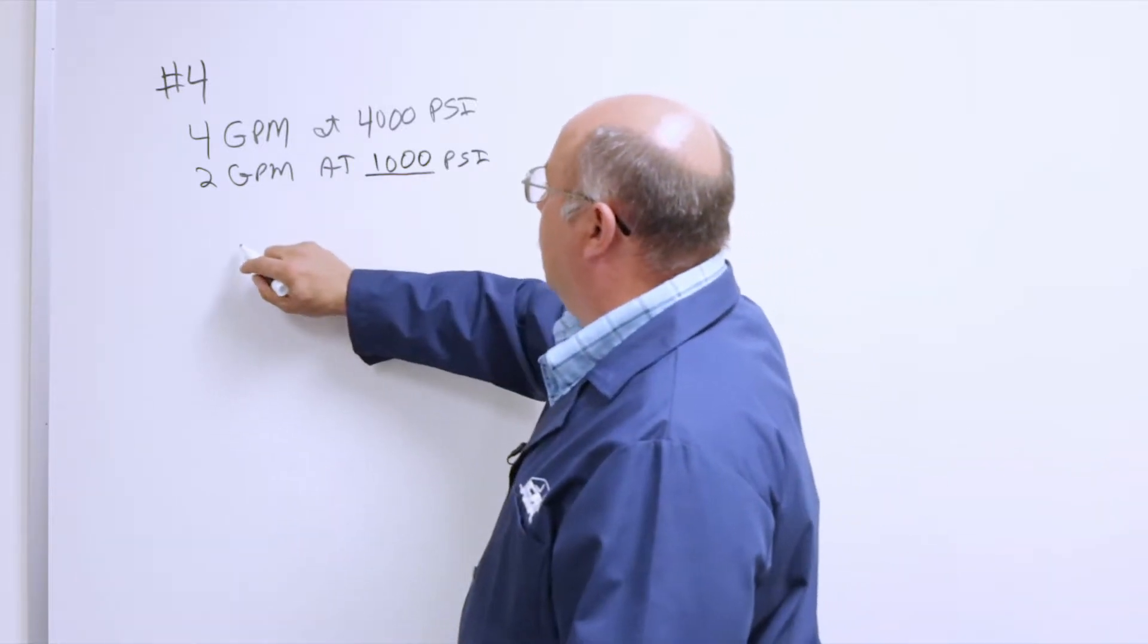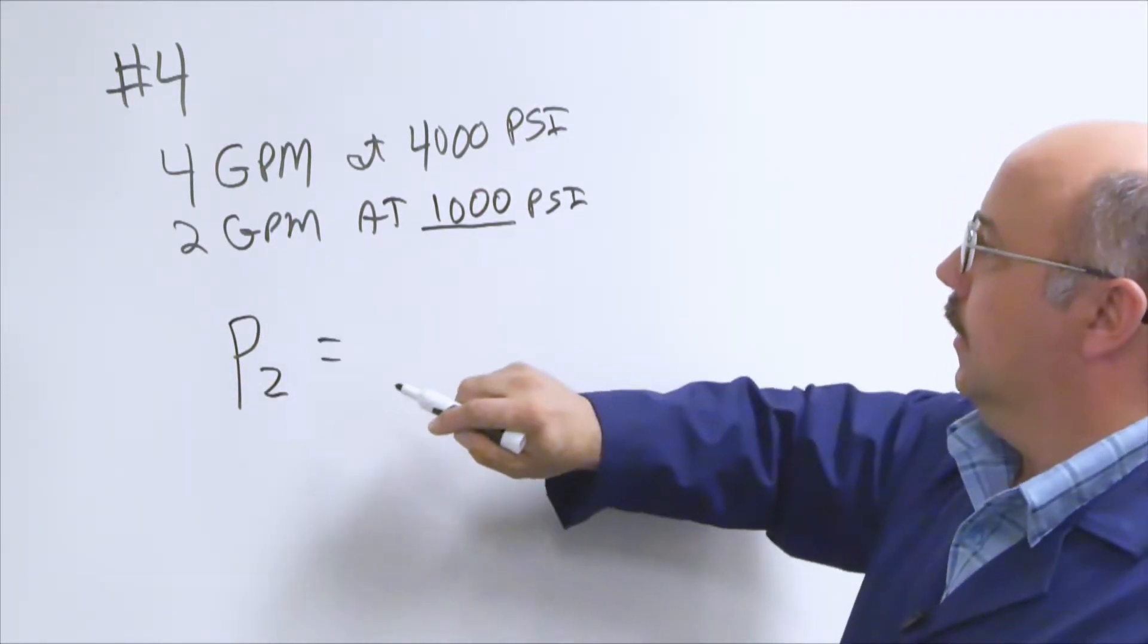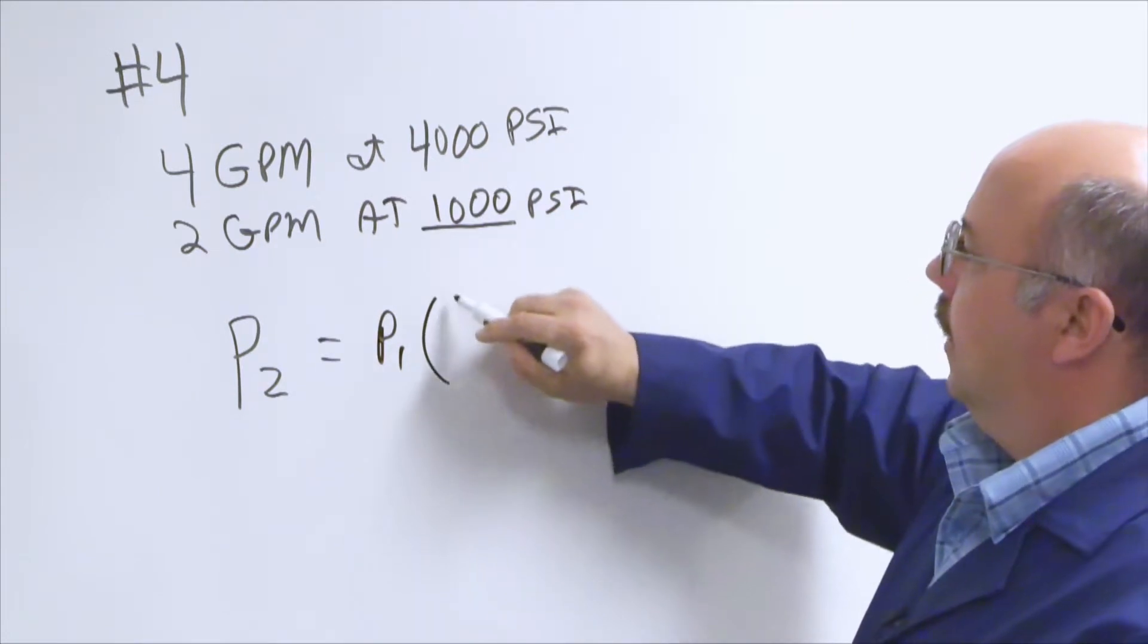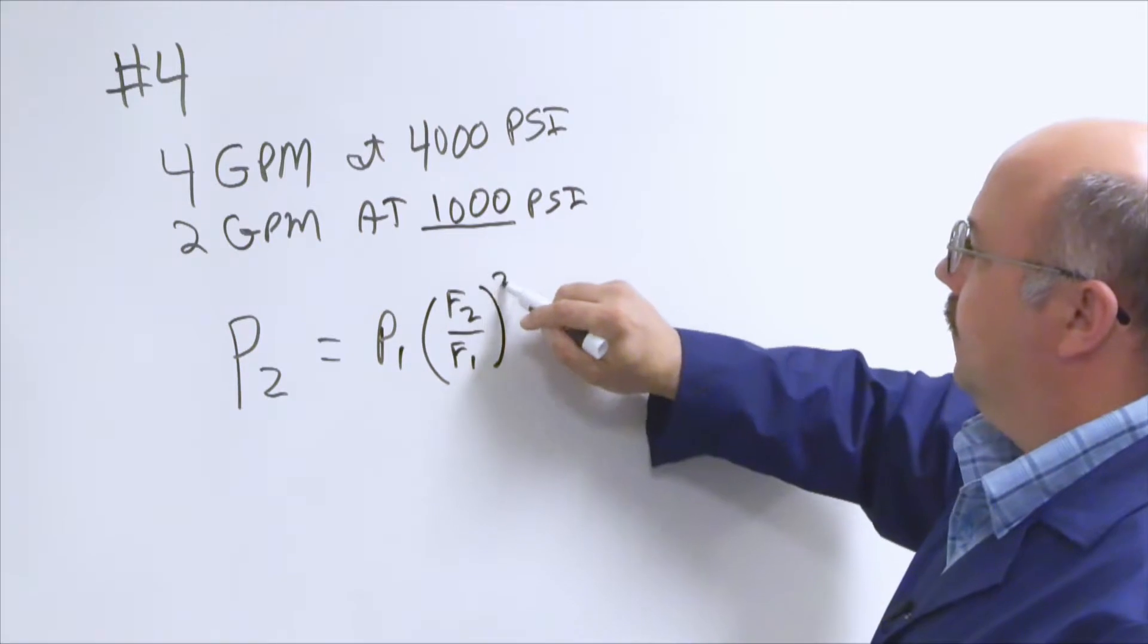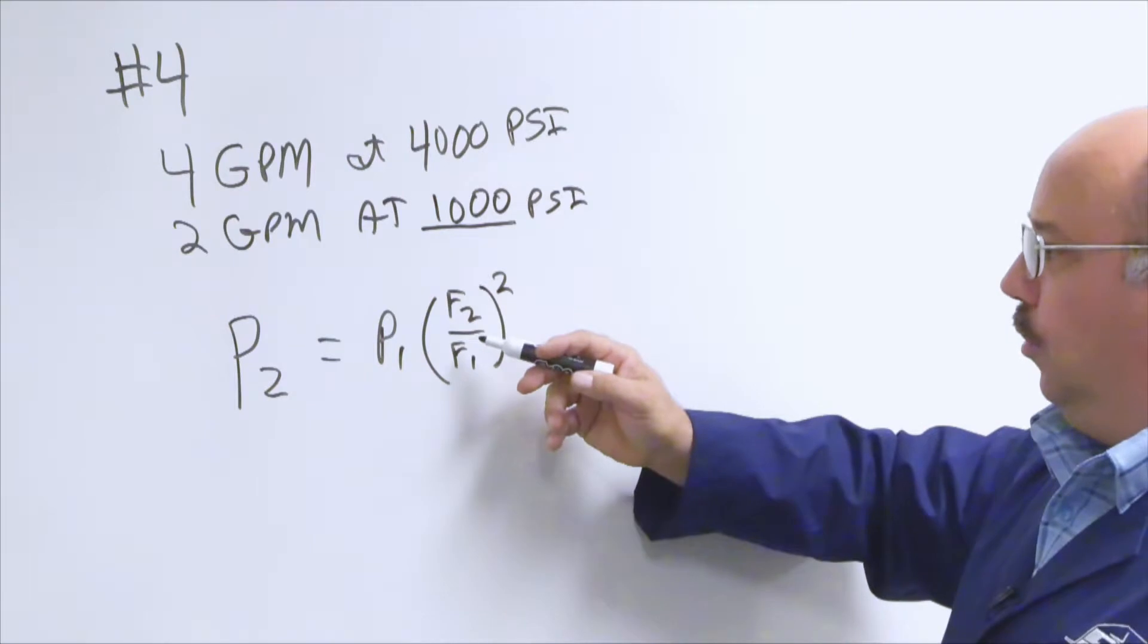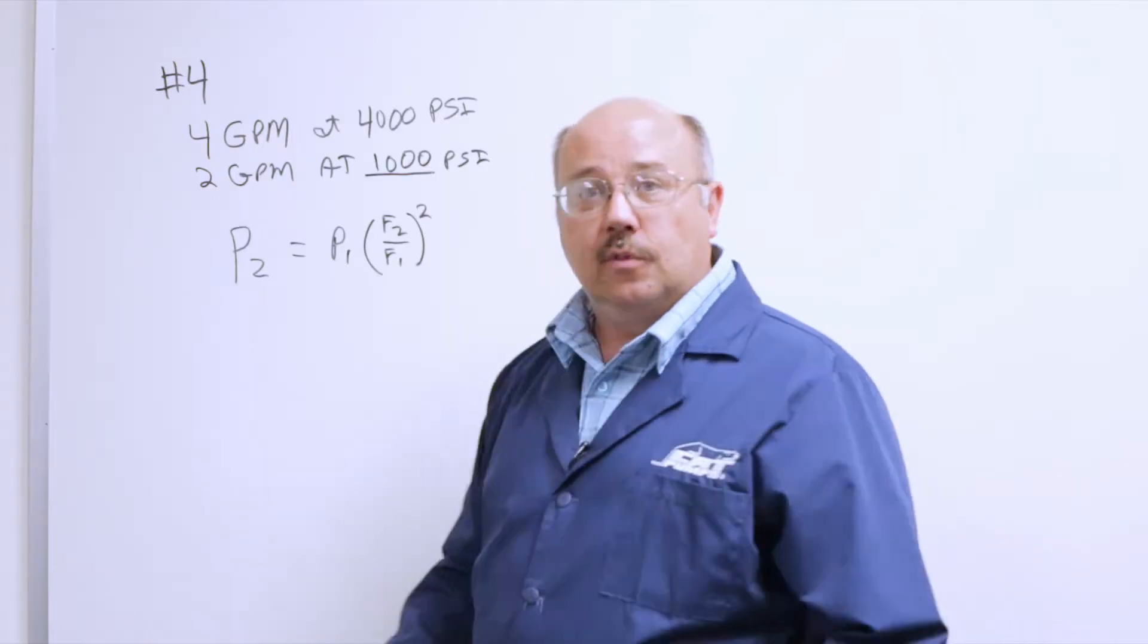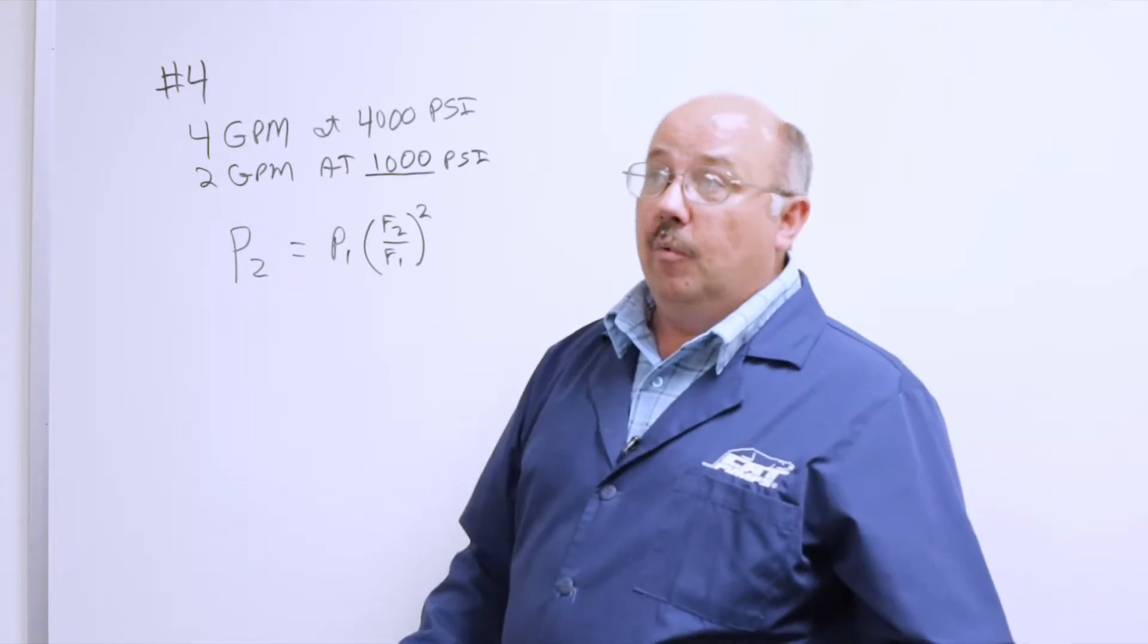And so we have to be able to explain that in a formula for doing calculations. The formula comes out that P2 equals P1 times the ratio F2 over F1, and then this is squared. So if we throw the numbers in there, we get 4 over 2, which is 2, square that, we get 4. 4 times 1,000 is 4,000. So the formula works out.